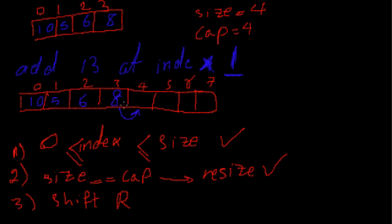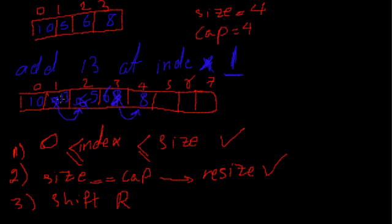You continue shifting: 5 at index 1 is copied to index 2. Now you have reached your goal index. You put 13 at index 1. Now you have the ArrayList containing 10, 13, 5, 6, 8 — with 13 correctly placed at index 1 and all other elements preserved.